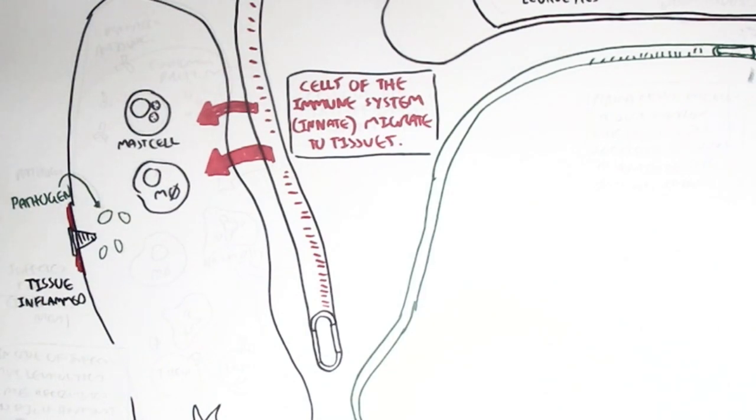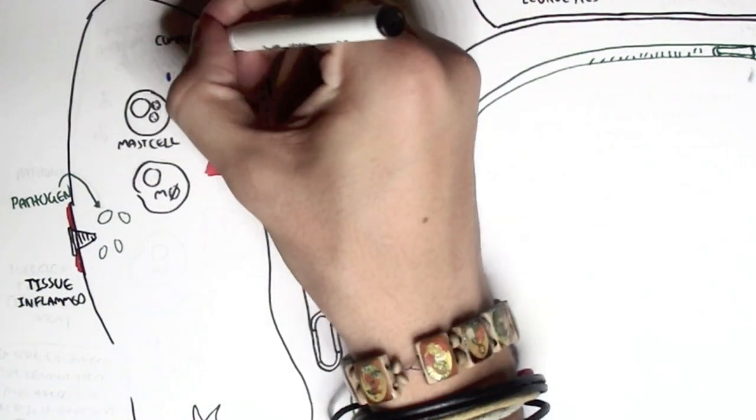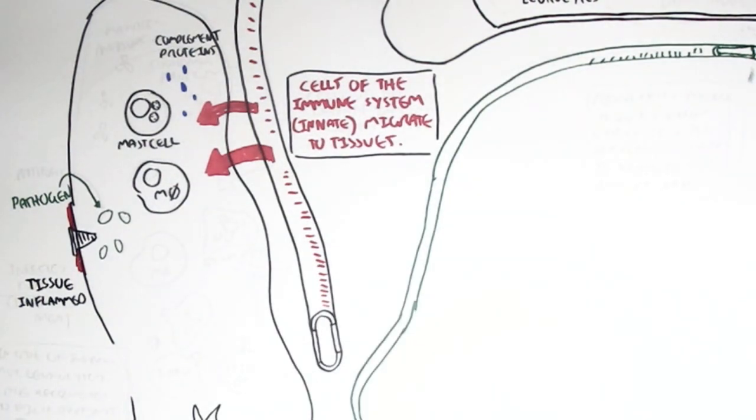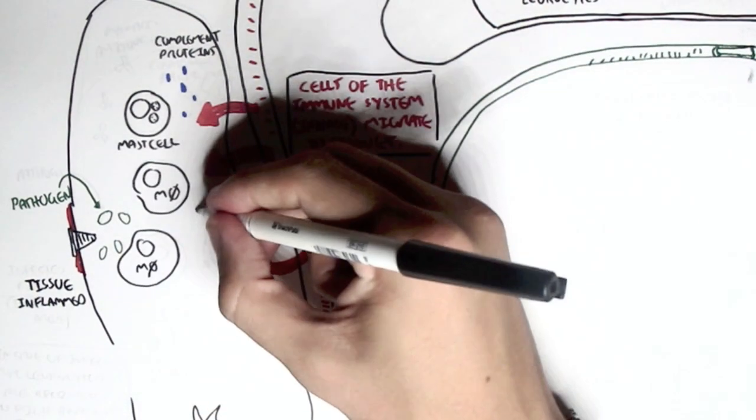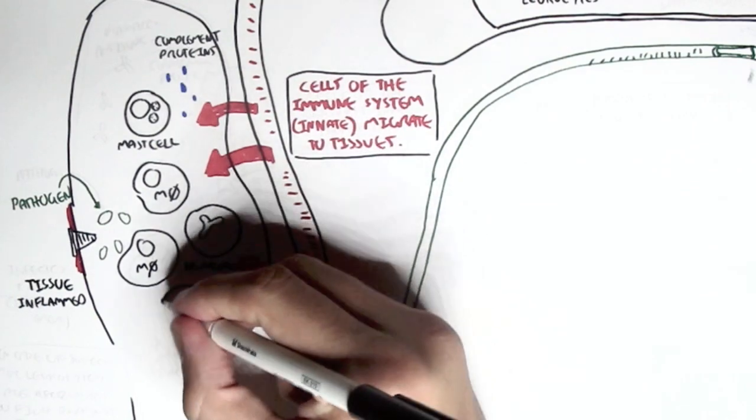Our tissues will become possibly inflamed during a pathogen invasion. So what would typically happen is that chemical signals will recruit more leukocytes to basically apprehend the invading pathogen, stopping it. And then we also have the complement proteins, which play a critical role in the innate immunity, making it easier for the leukocytes to destroy the pathogens.